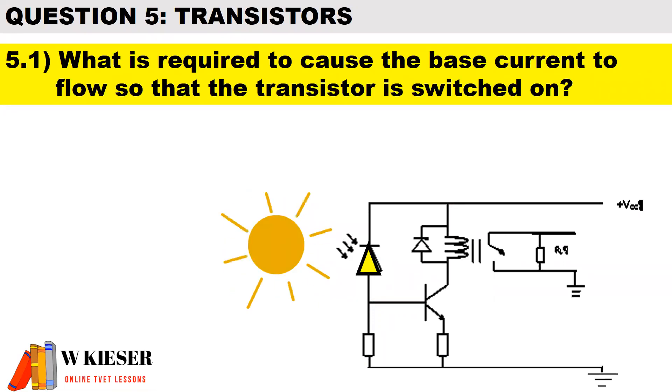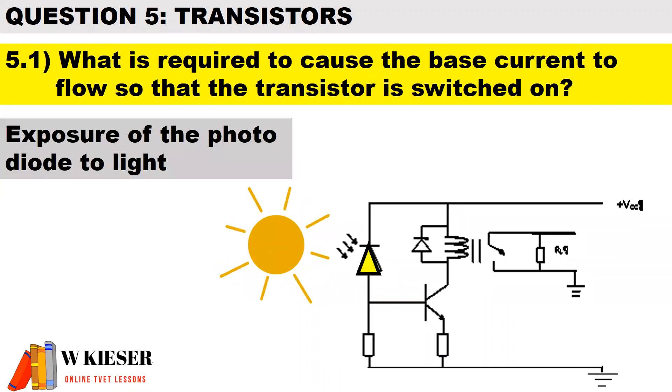Now in question 5.1, what is required to cause the base current to flow so that the transistor is switched on? The answer is exposure of photodiode to light.